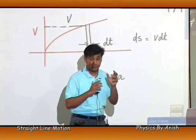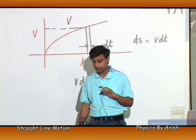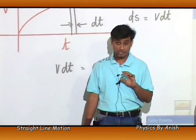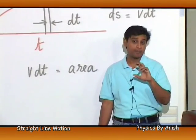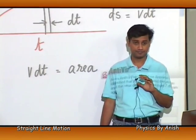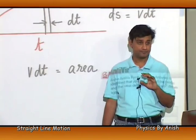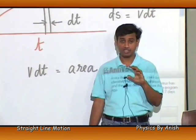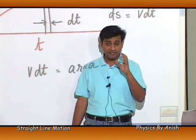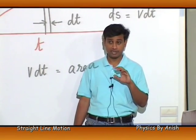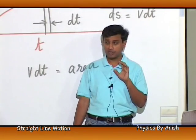For example, if it is 6 for distance and 5 minus 1 = 4 for displacement, the area of the velocity-time graph will give displacement. If velocity becomes negative, then we can find both distance and displacement, which will not be the same.